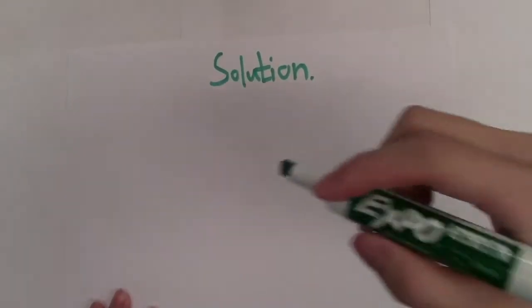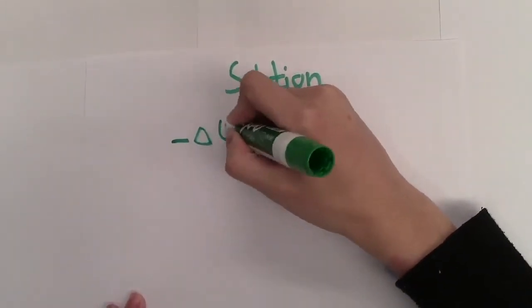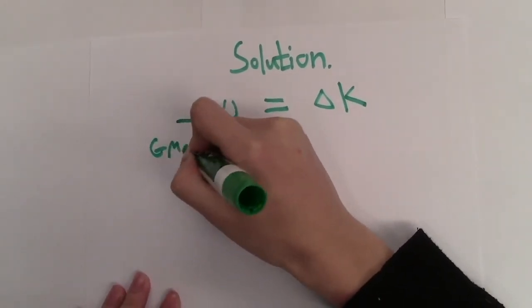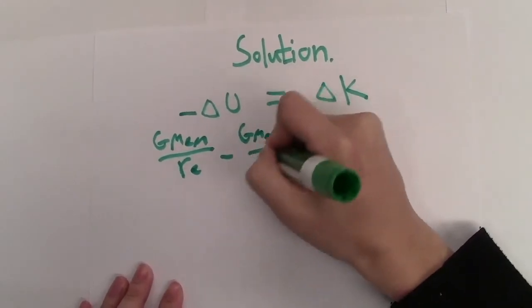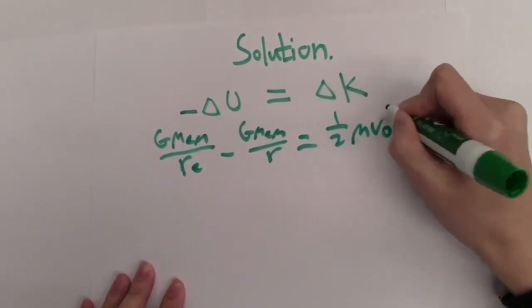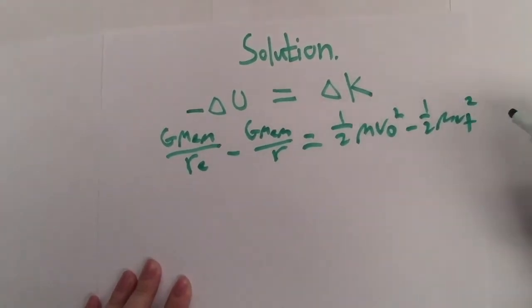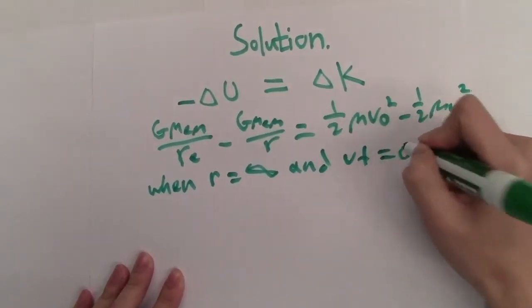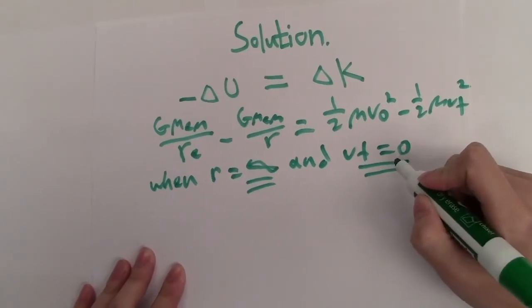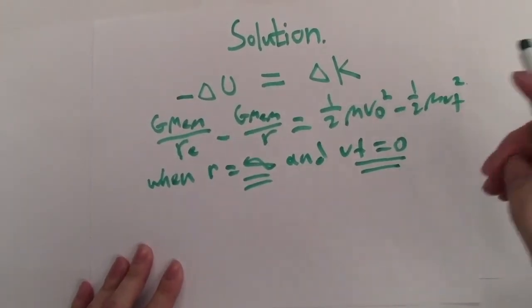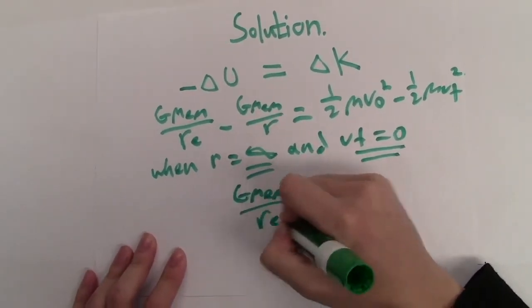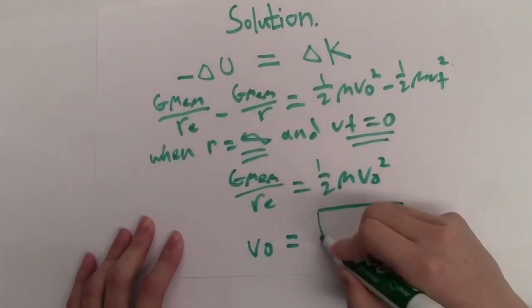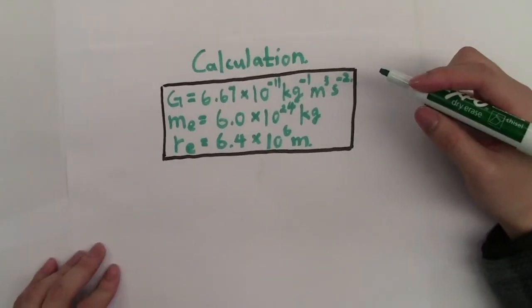So we've got enough knowledge to derive the escape velocity. By the law of conservation of energy, we have the following equations: GMₑm divided by rₑ minus GMₑm divided by r equals one-half m v₀ squared minus one-half m vf squared. So let's do the calculation. When r goes to infinity and vf equals zero, this is the moment when the object has completely left the orbit of the Earth. So we have GMₑm divided by rₑ equals one-half m v₀ squared, and v₀ equals square root of 2GMₑ divided by rₑ.